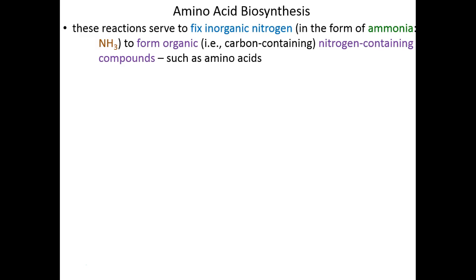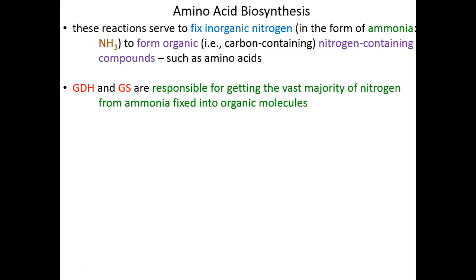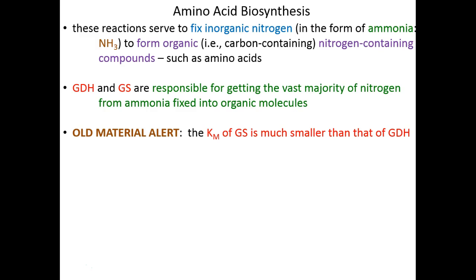These two reactions — reductive amination and amidation — both serve to fix inorganic nitrogen in the form of ammonia to organic, carbon-containing molecules such as amino acids and nucleotides. Glutamate dehydrogenase and glutamine synthetase are responsible for getting the vast majority of nitrogen into organic molecules through its ammonia form.